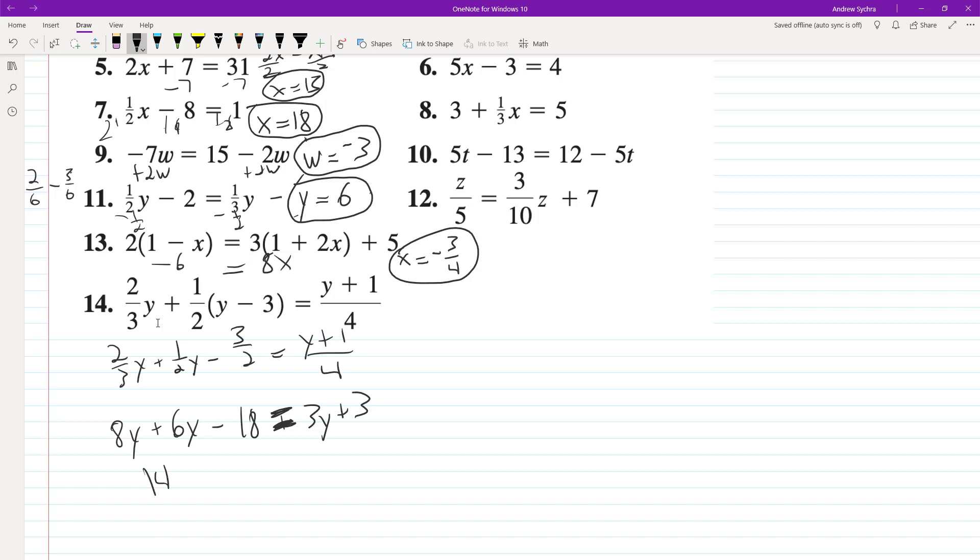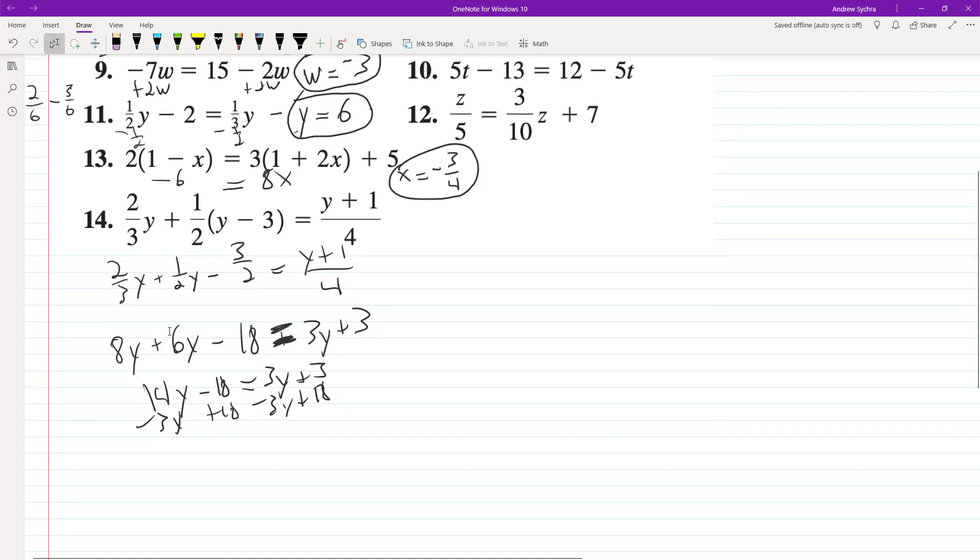So we end up with 14y minus 18 equals 3y plus 3. Add 18 to both sides. So we end up with 11y equals 22, divided by 11, y equals 2.